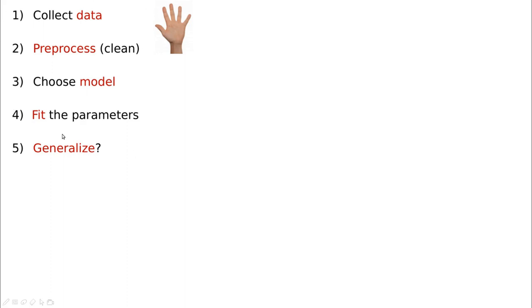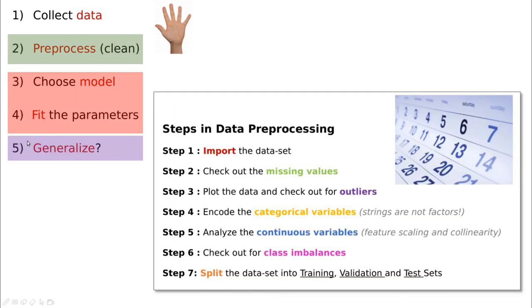I cannot resist to go back to our first videos in the series and remember that we are still doing this sort of process in which we are collecting data, we are pre-processing the data, choosing the right model, fitting the parameters and generalize. Of course we are going to discuss a lot of things but the target of this part of the course is try to see if we can generalize better because forecasting is about generalizing. And never forget about pre-processing the data and we're going to see how pre-processing properly the data is going to impact our predictions.